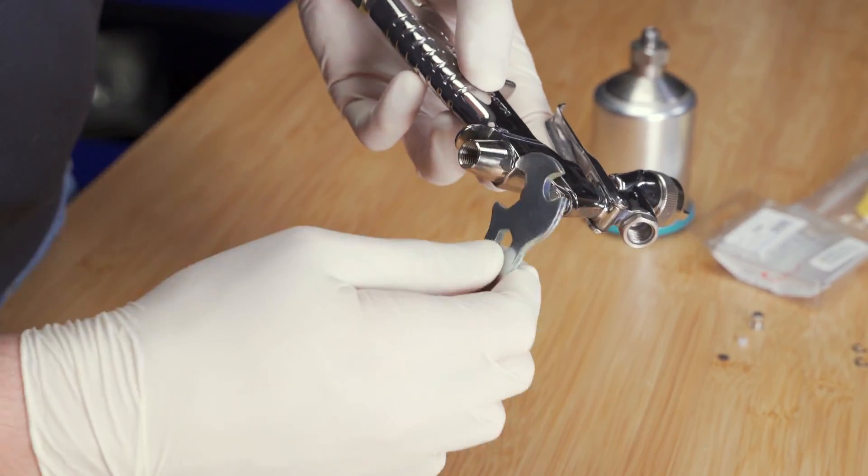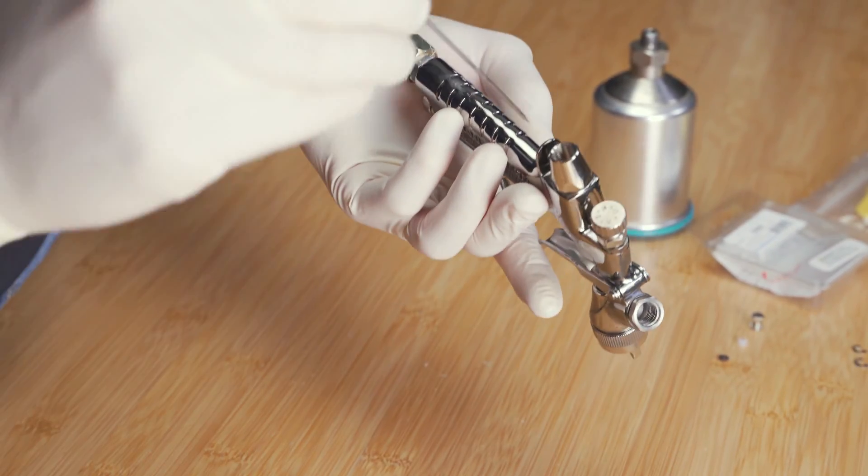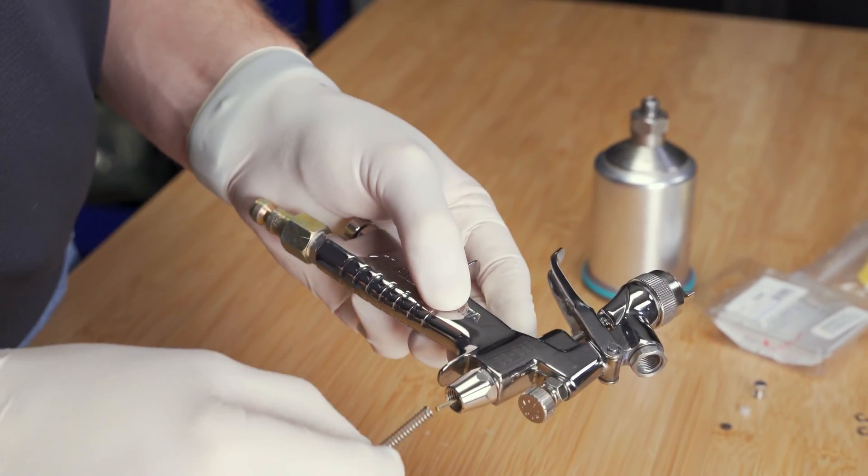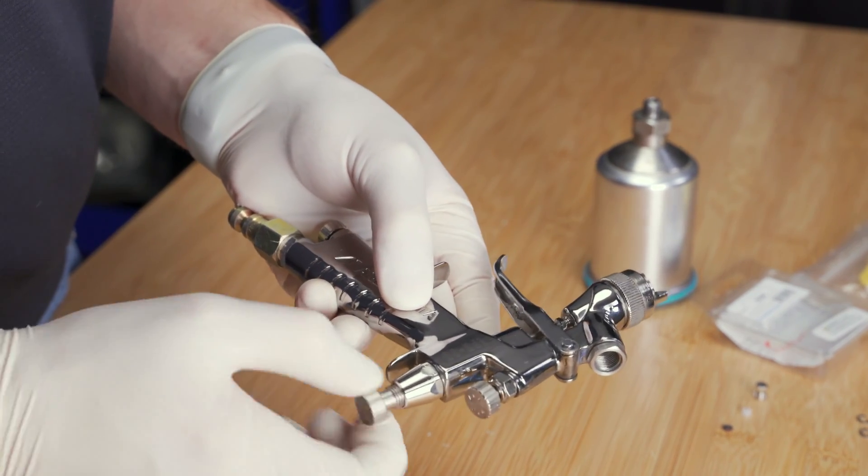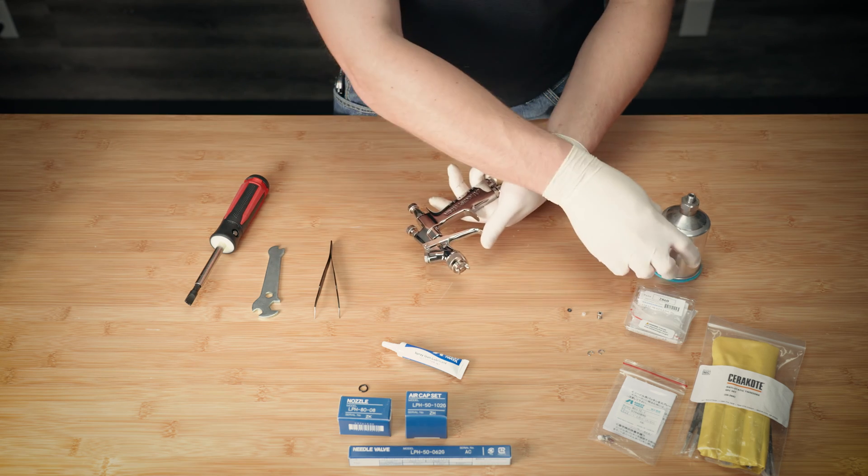Lastly, hand tighten with the Iwata wrench. Next, reinstall the fluid needle, return spring, and fluid adjustment knob. Verify the needle returns and operates smoothly.